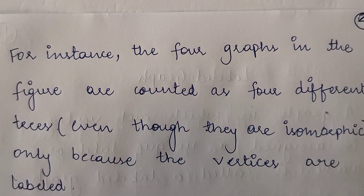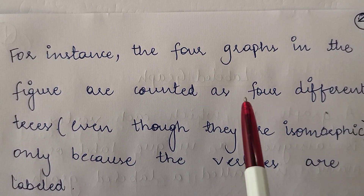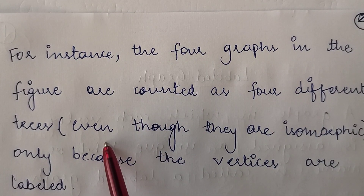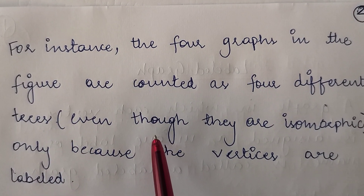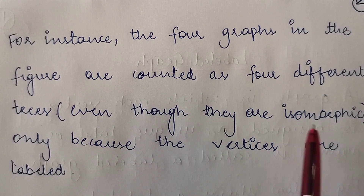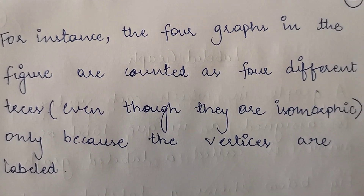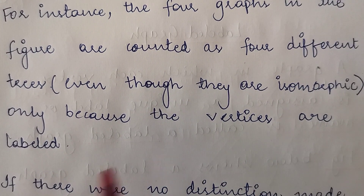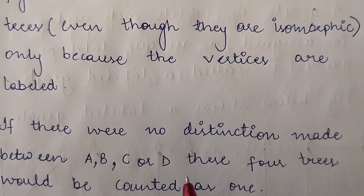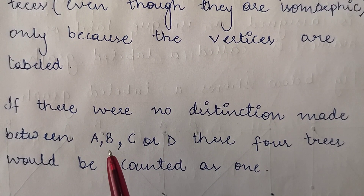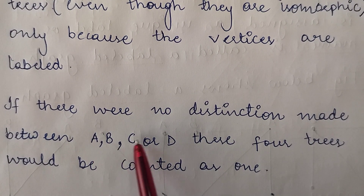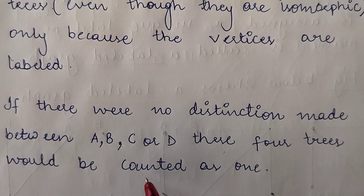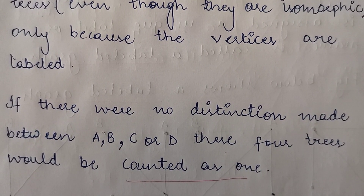For instance, the four graphs in the figure we've just seen are counted as four different graphs — or four different trees, because they are trees in this case — even though they are isomorphic, adhering to all the properties of isomorphism. Why? Only because the vertices are labeled. And if there were no distinction made between the vertices as A, B, C, or D, then without labels, these four trees would be counted as one.